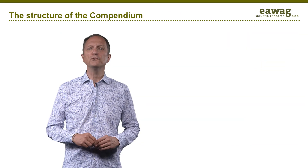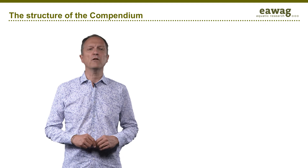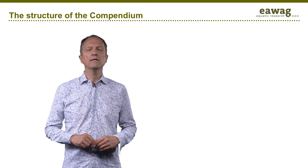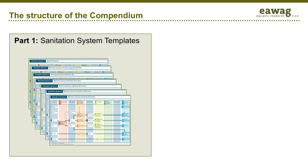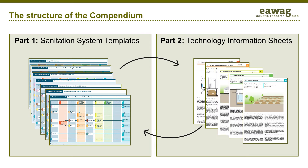I will now introduce you to the structure of the compendium. It comprises two parts: the first part illustrates different possible sanitation systems, and the second part provides a detailed overview of all 54 featured technologies, from a simple pit to conventional sewers.